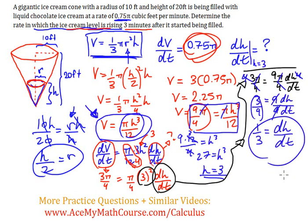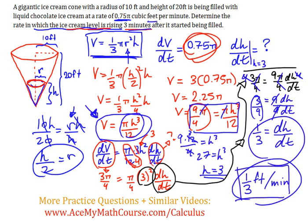And what does that mean? That means that the level, the rate in which ice cream level is rising is one-third of a foot per minute. And be careful with the units. In this case, we're using feet per minute. So, that's what we are going to have. That's it.